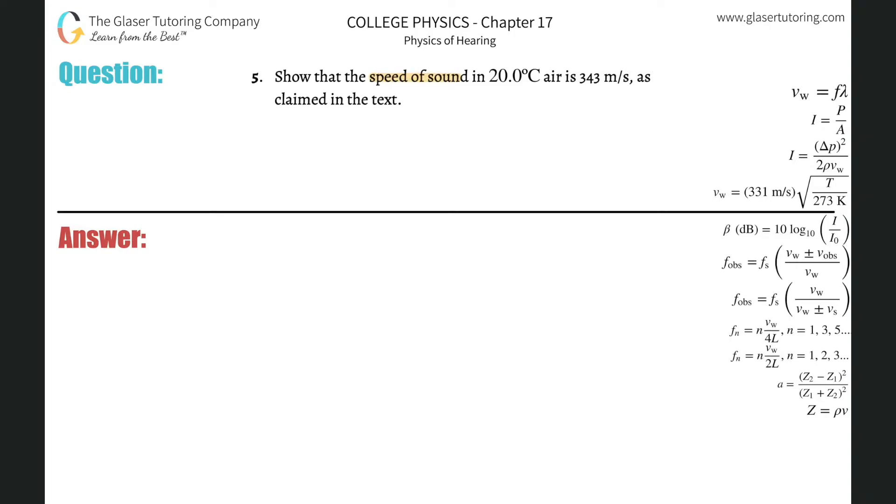Number five, show that the speed of sound in 20 degrees Celsius air is 343 meters per second, as claimed in the text.